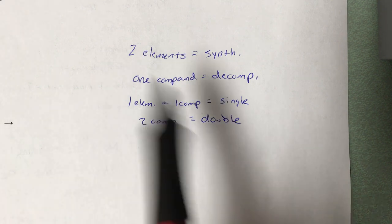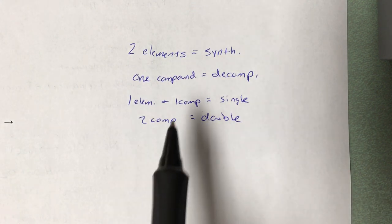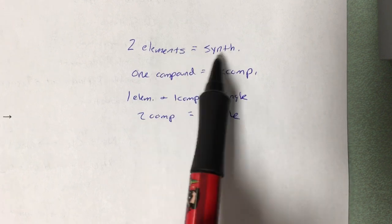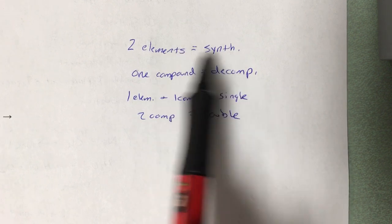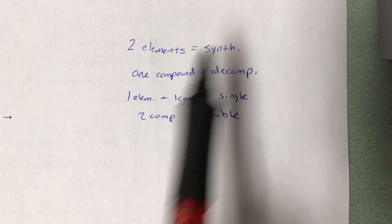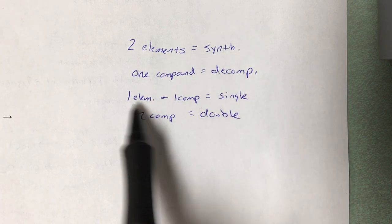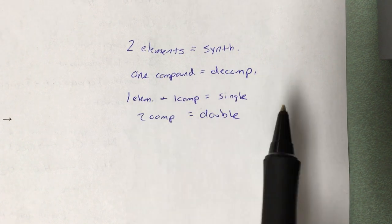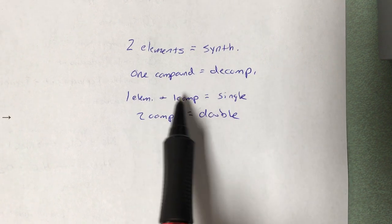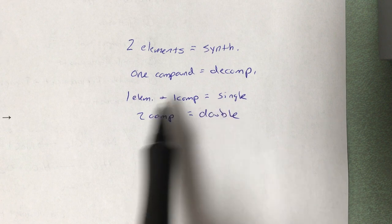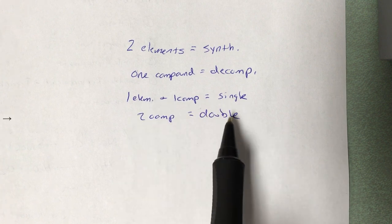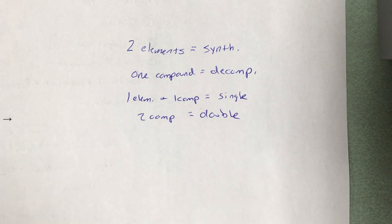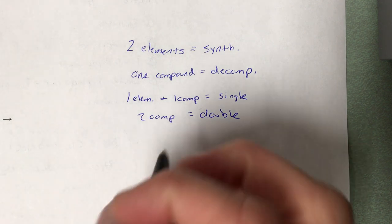Here you'd be writing the formula for one compound as your product — that's synthesis. In single replacement, you'd have one compound and one element as your product. Again, your compound is going to come from the crisscross. And in double replacement, you'd be writing two compounds, and those two compounds would come from the crisscross method — you'd figure out the subscripts that way.